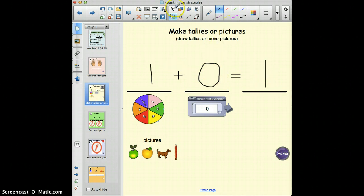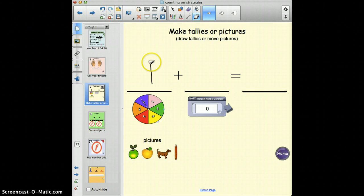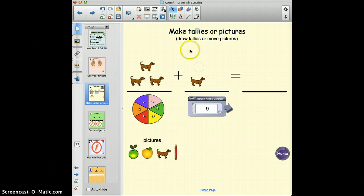They could also use the pictures down below. They could choose whatever picture they want so it's engaging and fun for them. Let's click on the spinner and it says three. So maybe they want to use three dogs - one, two, three. Then plus nine, and they would add nine more dogs up here. Then finally they would get to count and touch the board and use all the different dogs and figure out what their answer would be.